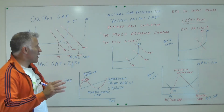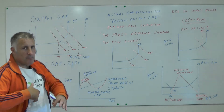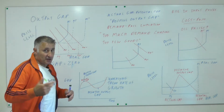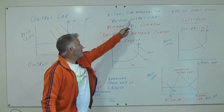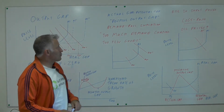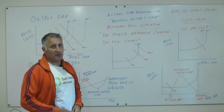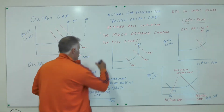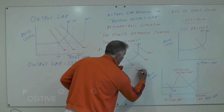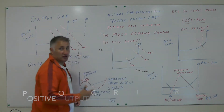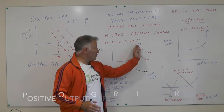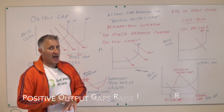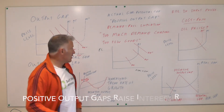The monetary policy committee also thinks ahead: will the output gap be positive in the future? A positive output gap means you're going to get demand pull inflation. Demand pull inflation is too much demand chasing too few goods. On the price level versus real GDP diagram, aggregate demand has got out of control — there's more and more demand in the economy and we can't produce enough goods.